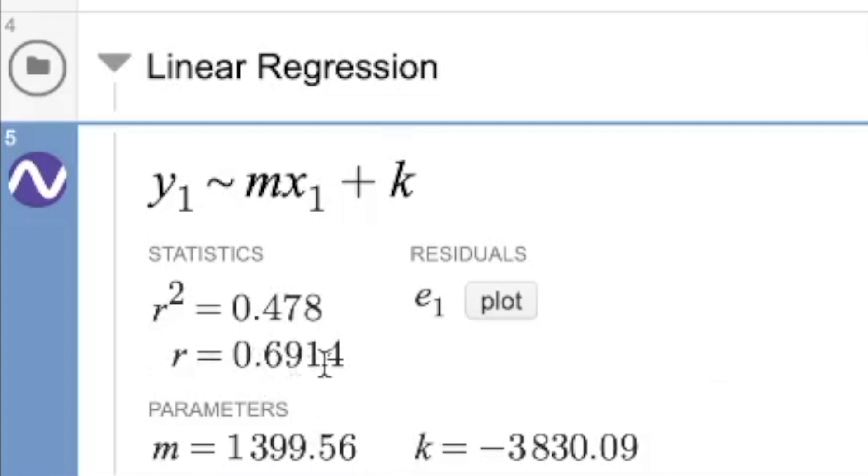Notice the r value and the r squared value tell us how good of a fit this line is, and with an r squared of only 0.478, that is really not a good fit for our data.